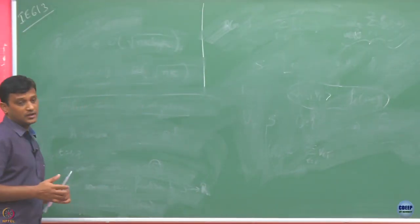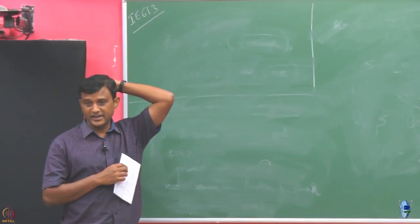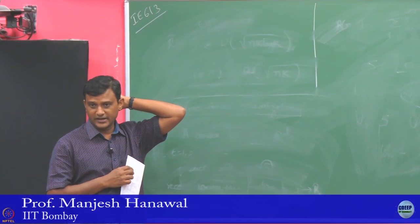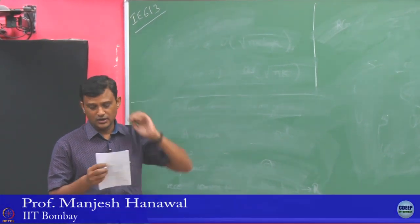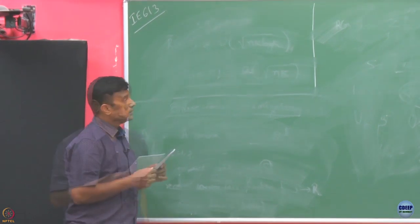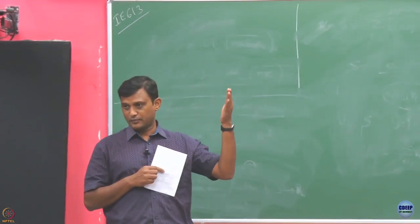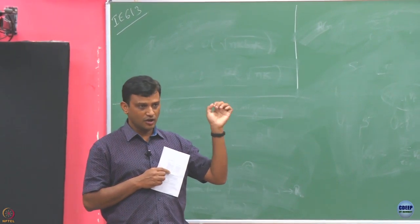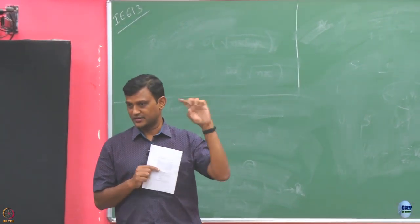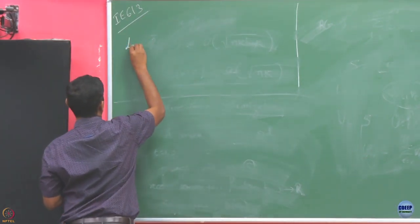Before we show the regret we get by this algorithm, follow the leader, we are going to show that the regret can be bounded in terms of this loss function observed at two consecutive predictions. Let me make that formal — that is a lemma.